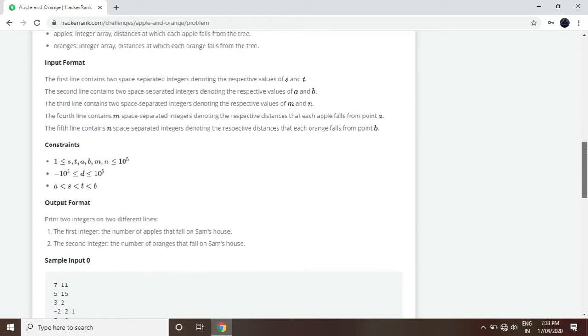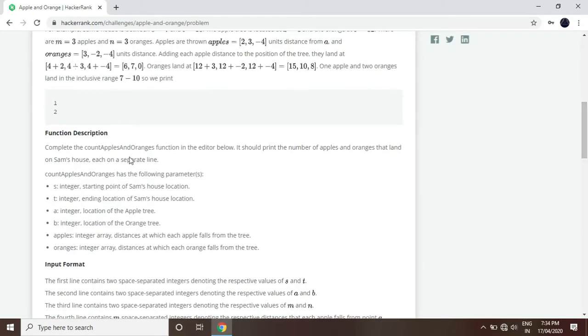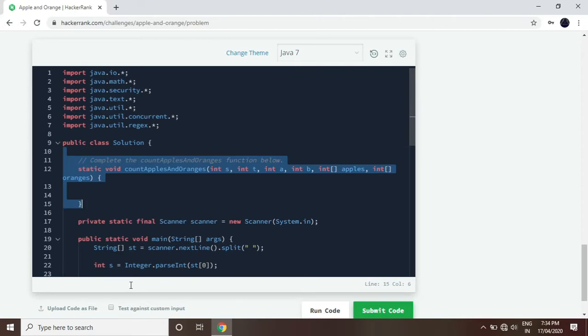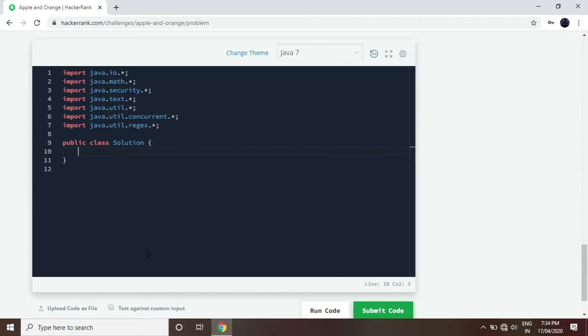Let's do the solution. The style of input is like this. First of all, we have input S, T, A, B, and two arrays. This is our test case. Now I will clean it up. We will write the starting point.